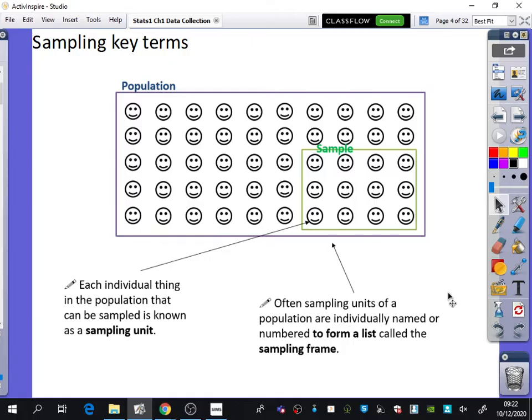Often, sampling units are individually named or numbered to form a list called the sampling frame. In this population, we could assign each sampling unit a number, which would create the sampling frame. The sampling frame is like the database of all the population that exists.